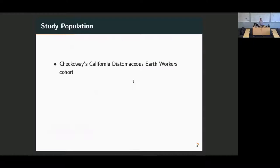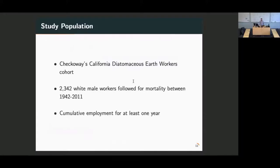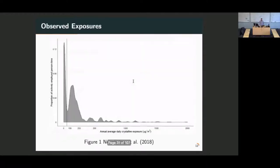We're going to estimate risk of specifically lung cancer and non-malignant respiratory disease mortality, which are both causes of death that are strongly linked with silica exposure under both those interventions. The study population was Harvey Checkoway's California Diatomaceous Earth Workers cohort. Briefly, it's 2,342 white male workers followed for mortality for about 70 years. The main inclusion criterion was that they had at least one year of cumulative employment at the participating mines. These are the observed exposures. The vertical line at 50 is where the limit, our hypothetical limit, would have been. You see there's quite a bit of the exposure distribution that's above that. Everything that's above that limit, we would bring down to 50.